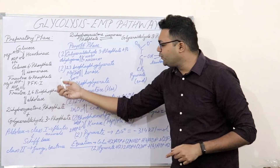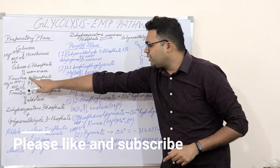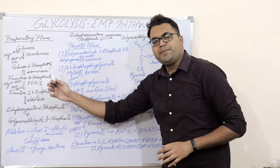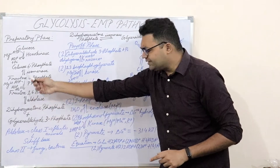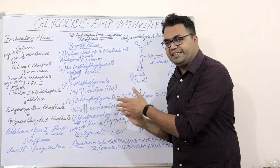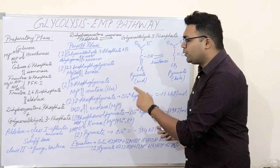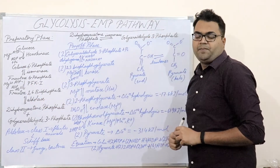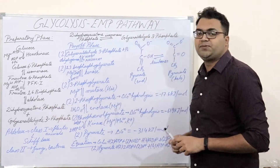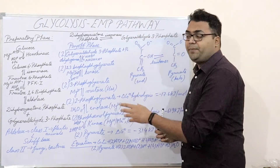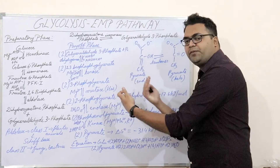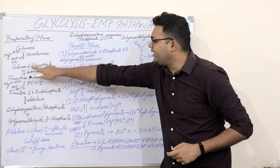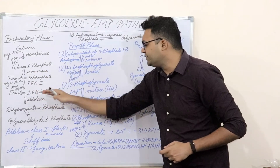Phosphofructokinase-2 converts fructose-6-phosphate to fructose-2,6-bisphosphate by transferring the phosphate group to the second carbon. Phosphofructokinase-1, however, catalyzes the conversion of fructose-6-phosphate to fructose-1,6-bisphosphate using ATP as substrate and Mg2+ as cofactor — an irreversible process with negative ΔG. It transfers the phosphate from the gamma position of ATP to the first carbon of fructose. You must be careful with naming: biphosphate means two phosphates at the same carbon position, whereas bisphosphate means one phosphate at carbon one and another at carbon six.